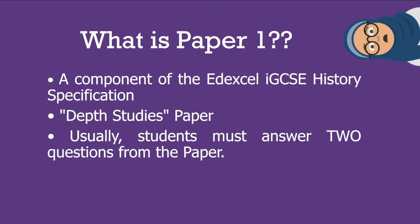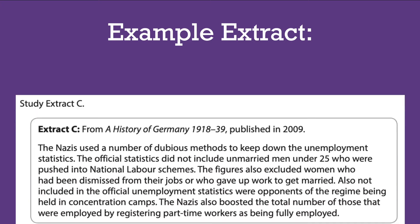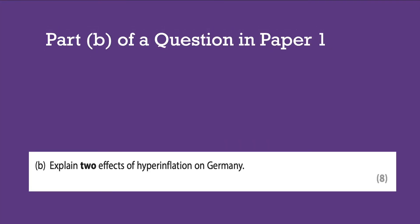Usually students must answer only two questions from this paper, and only one extract is provided for each question. Here's an example extract from Germany - the development of dictatorship. The examiners expect you to read and study this extract. Part A is mainly concerned with it, but Part B is not quite related to the extract - you don't really have to use it for Part B. I'm just showing it so you know how it appears in Paper 1.